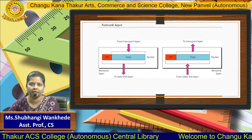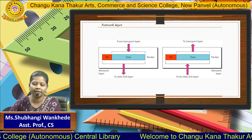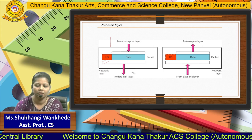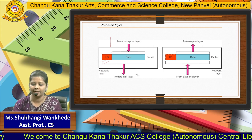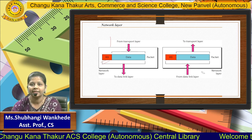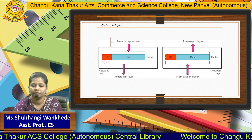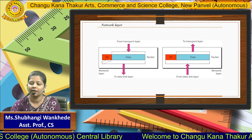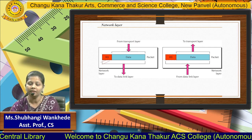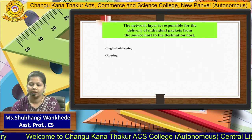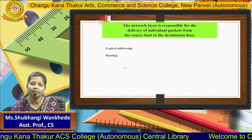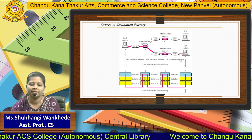The network layer gets data from the transport layer and sends it to the data link layer at the sender side. At the receiver side, it sends data to the transport layer. The network layer performs packetizing — it creates packets from the data. The responsibilities of the network layer are logical addressing, routing, and source-to-destination delivery.